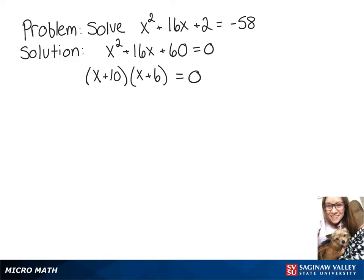Now we're going to solve those two equations separately and write x plus 10 equals 0 or our other answer would be x plus 6 equals 0. So now solving our equation on the left when we subtract 10 from both sides we'll get x equals negative 10. Or solving our equation on the right subtracting 6 from both sides would give us x equals negative 6.